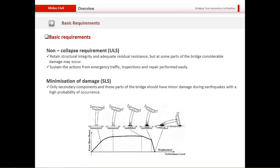Coming to our basic requirements: they are pretty much the same across both the American and European codes. We have a non-collapse requirement — the structure should not collapse. Under ULS it should maintain its structural integrity, and even though considerable damage may occur at some parts of the bridge, overall the bridge should not collapse. It should sustain actions from emergency traffic and inspection, and repair should be easy. The SLS requirements are along the lines of damage minimization — only non-load-bearing or secondary components should sustain any damage.